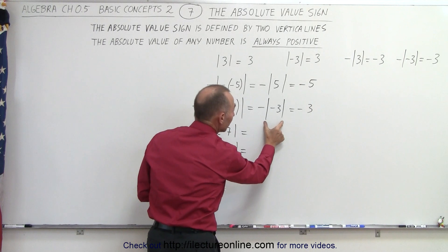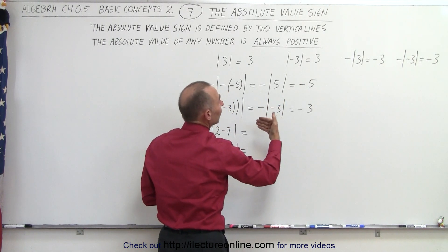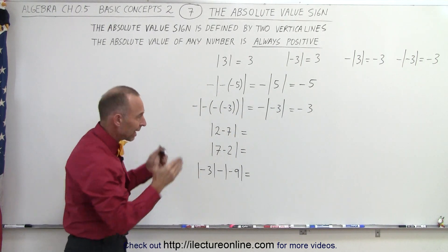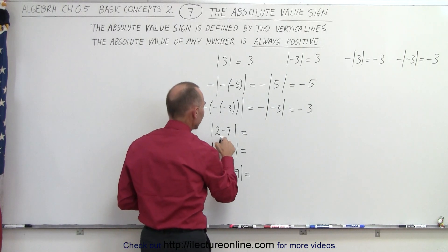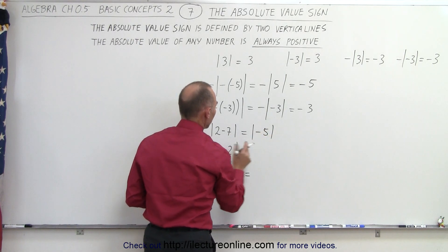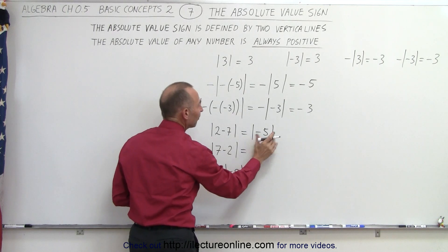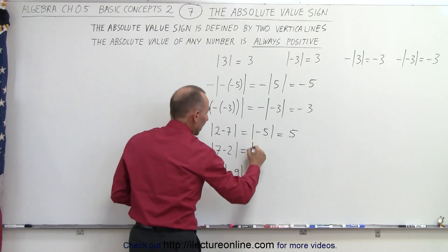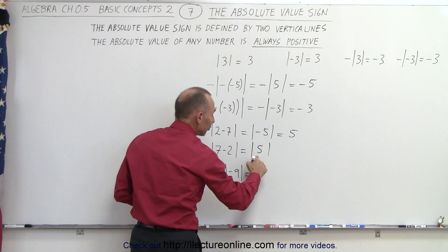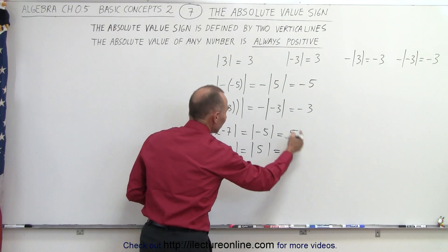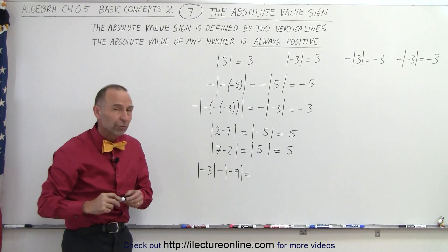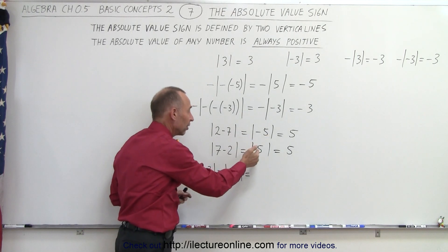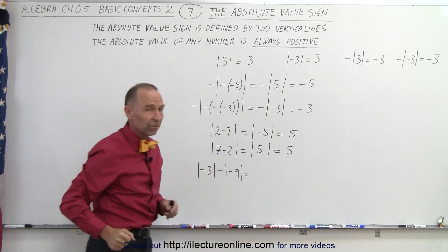When we get something like this, we should work out what's inside the absolute value signs first. Here we get 2 minus 7, which is equal to negative 5. But we still have the absolute value signs around that negative 5, which makes it a positive value. If we have 7 minus 2, that would be the absolute value of 5, and the absolute value of 5 is still 5. So this is what absolute value signs typically do — you take the absolute value of an operation, and it doesn't matter if you get a negative or positive result, the absolute value always gives you a positive result.